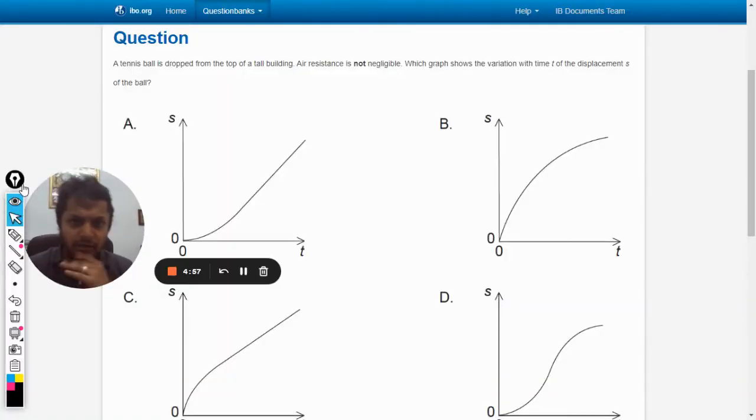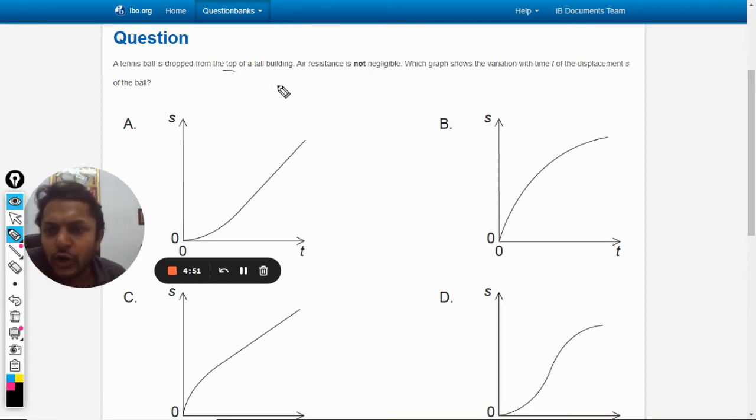Okay dear students, let us see what is in this question. A tennis ball is dropped from the top of a tall building. Air resistance is not negligible. This is a very crucial point to be noted—air resistance is not negligible. Which graph shows the variation with time t of the displacement s of the ball?